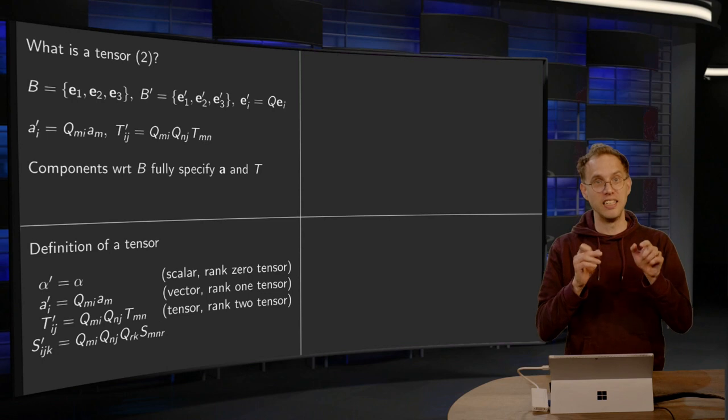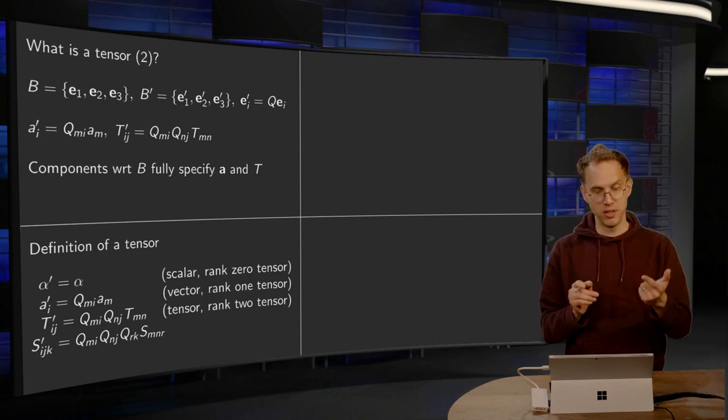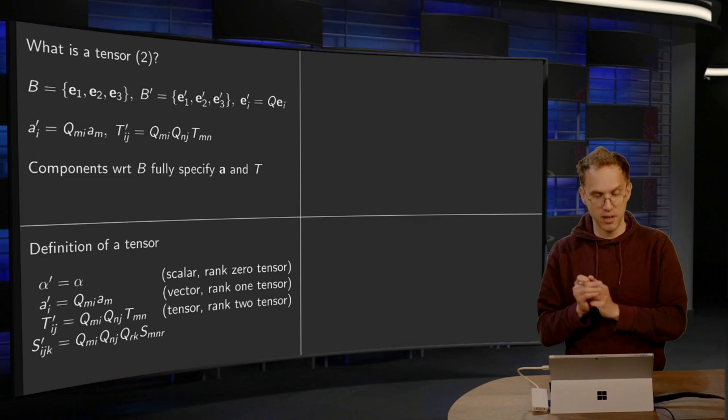So for example, for a rank three tensor, we define it as Sijk' to be Qmi Qnj Qrk and then Smnr, and so on and so forth.